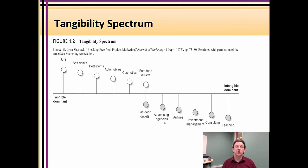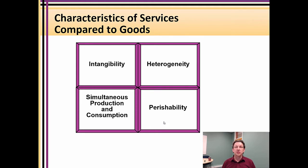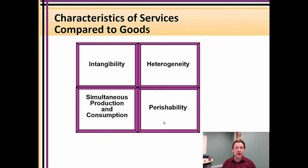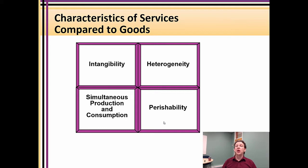One key test for tangibility versus intangibility is whether you can stockpile or physically interact with the product offering. The first key aspect of the unique characteristics of Services Marketing — in contrast to goods marketing — is the notion of intangibility: the spectrum from intangible through to tangible. This is one of four facets, sometimes called the four pillars, that are the key characteristics of services, helping you draw a line between what is a goods-dominant product offer, what is a conjunction of service and product, and what is a purely physical object.